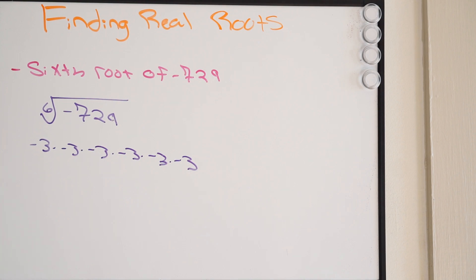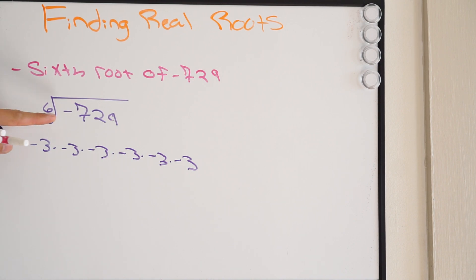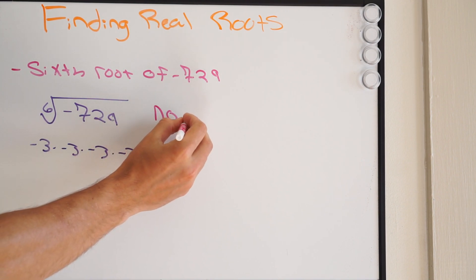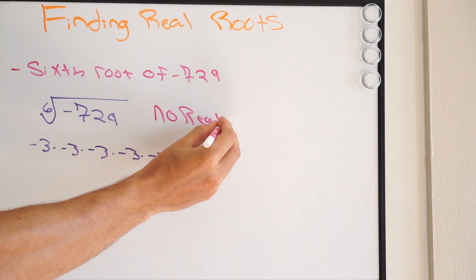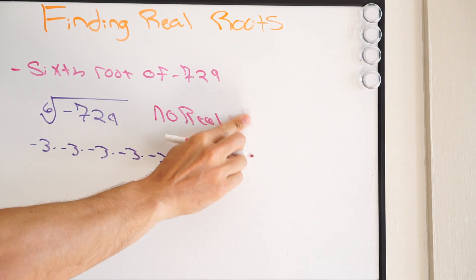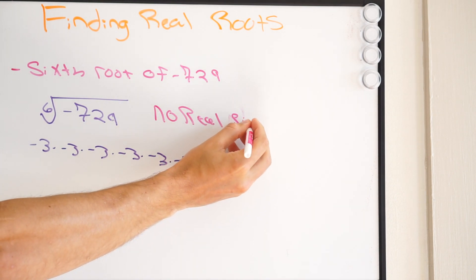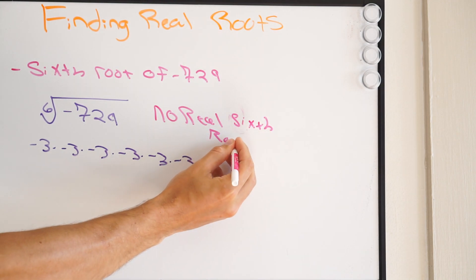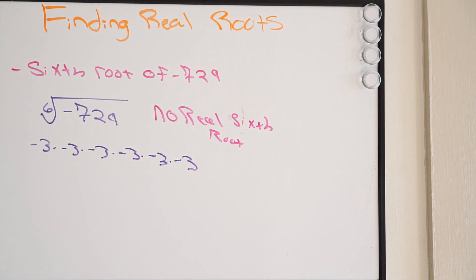So this is impossible — we can't find an answer here. In this particular problem there's going to be no real sixth root. It's mathematically impossible because this is an even root, and it's impossible to get a negative result when dealing with an even root. So the answer is: no real sixth root.